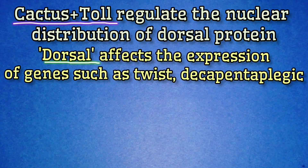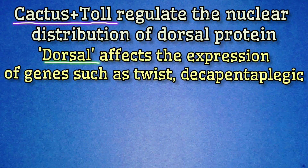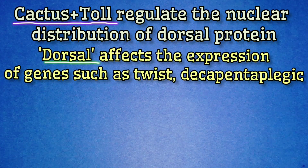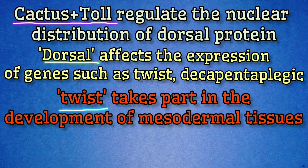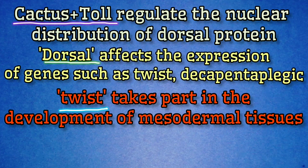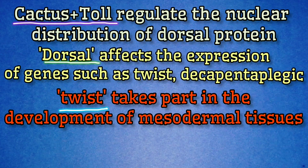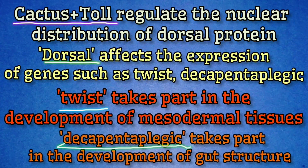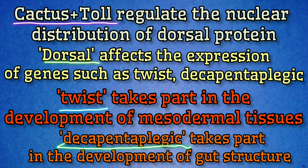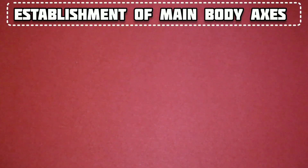Inside the nucleus, dorsal protein acts as a transcription factor, binding to regulatory sites on the DNA and activating or repressing the expression of other genes. High nuclear concentration of dorsal protein activates a gene called twist, which causes ventral tissues to develop. Low nuclear concentration of dorsal protein activates a gene called decapentaplegic, which specifies dorsal structures. In this way, the ventral and dorsal sides of the embryo are determined.